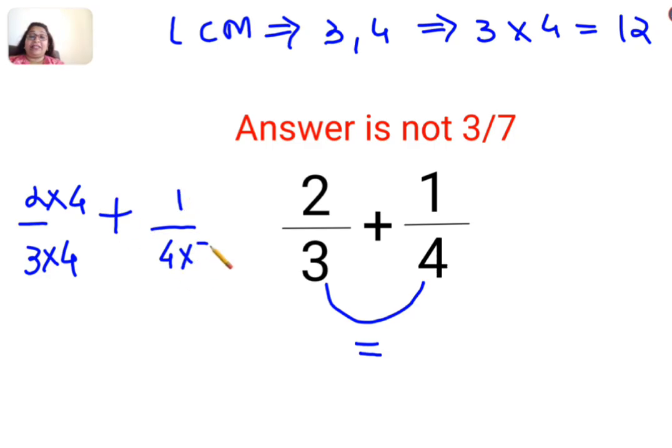And the same thing happens in the numerator. So basically this comes out to be 2 multiplied by 4, which is 8 upon 12, plus 3 upon 12.